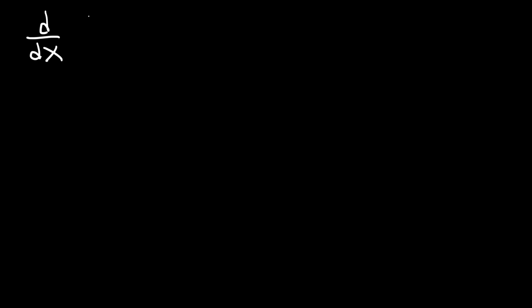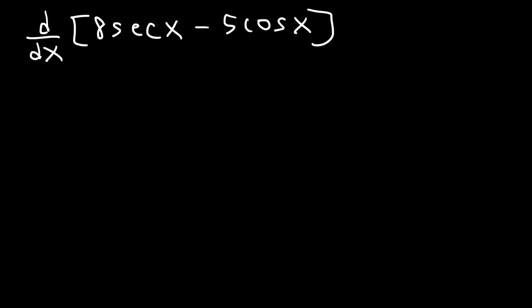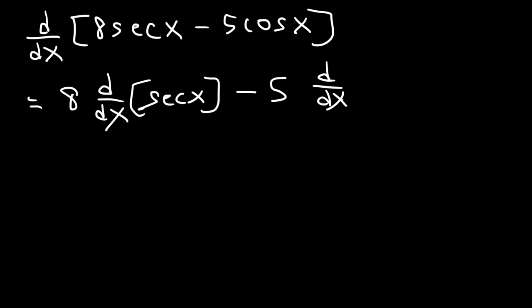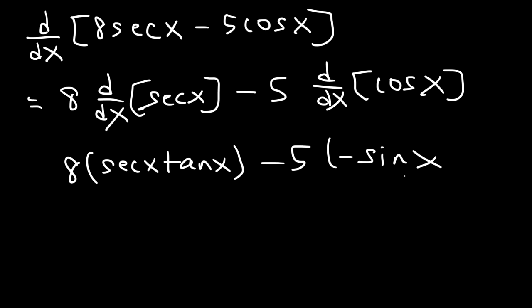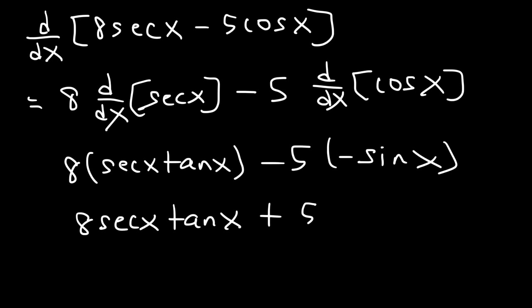Now let's work on another similar example. Let's find the derivative of 8 secant x minus 5 cosine x. This is equal to 8 times the derivative of secant x minus 5 times the derivative of cosine x. The derivative of secant is secant tangent, and the derivative of cosine is negative sine. So the final answer is 8 secant x tangent x plus 5 sine x.